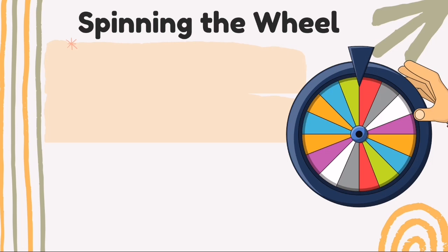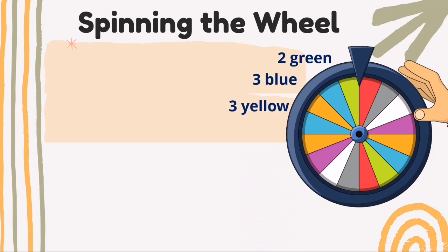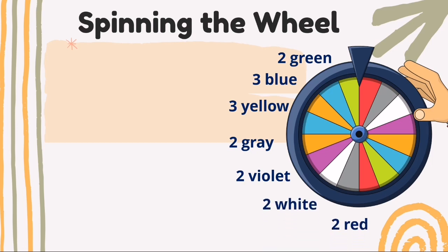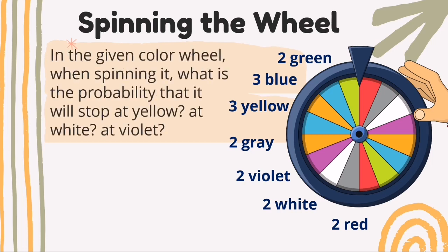This experiment is about spinning the wheel. From the color wheel on your screen, we have two green, three blue, three yellow, two gray, two violet, two white, and two red — a total of 16 sections. The problem is: when spinning the wheel, what is the probability it will stop at yellow? Based on the given wheel, there are three yellow sections, therefore the probability is 3 over 16.